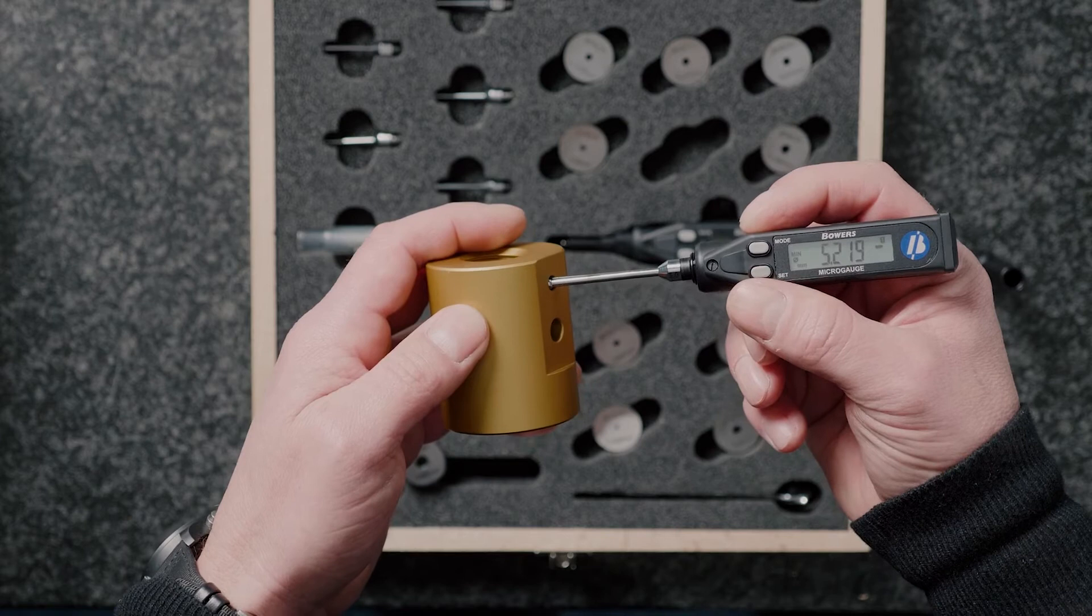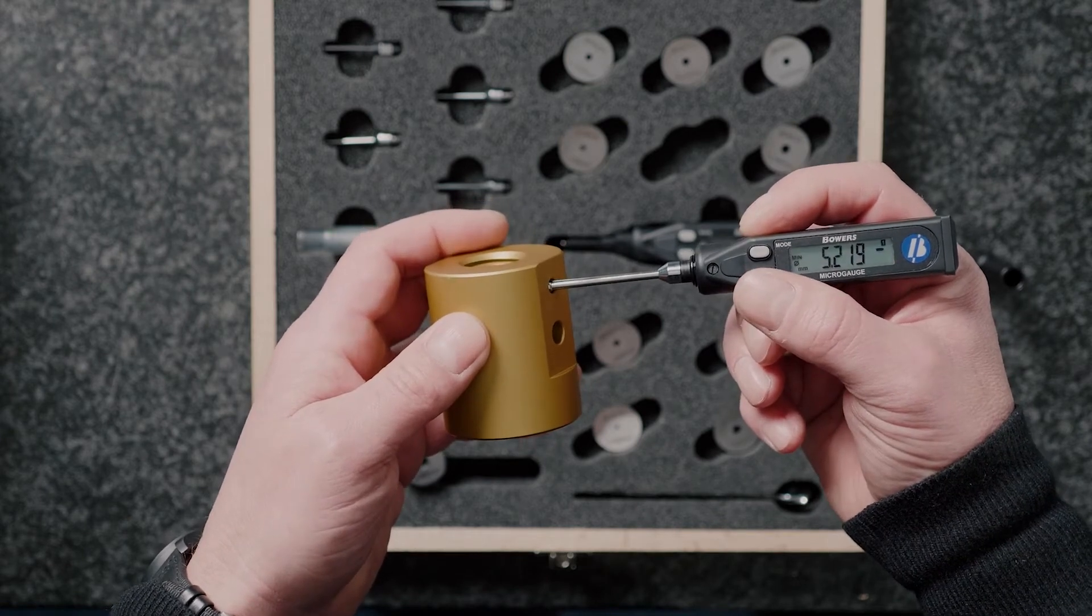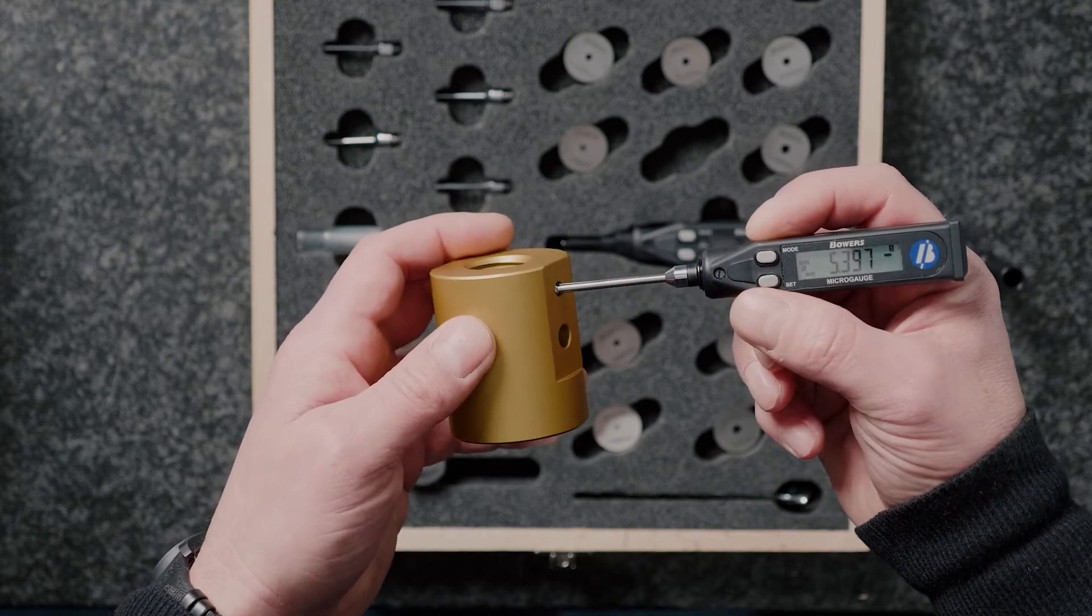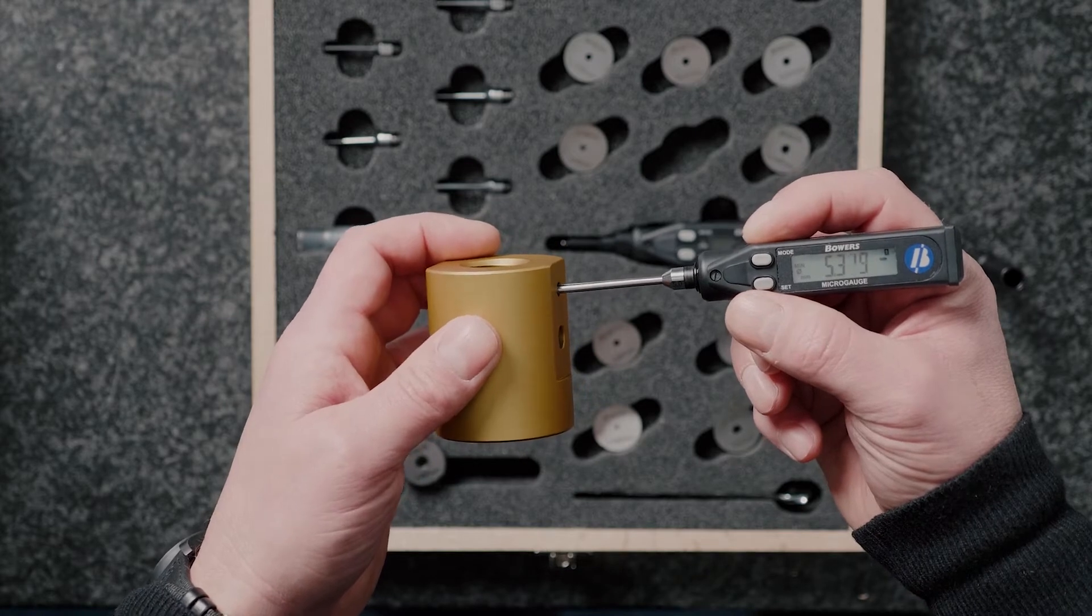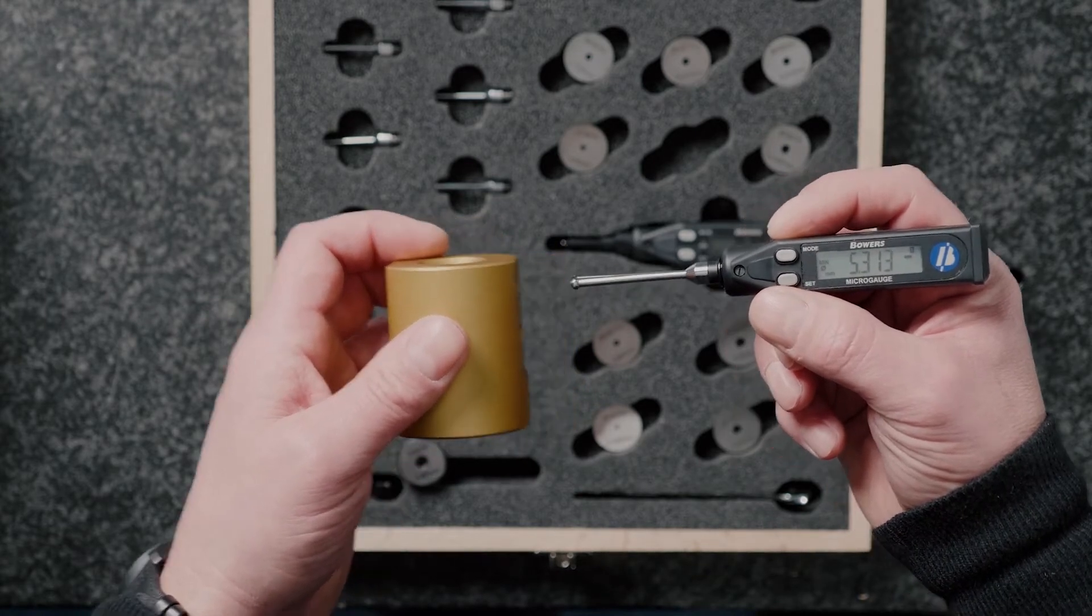So I'm going to enter the probe head into the bore, reset the gauge, sweep through. There is my diameter.